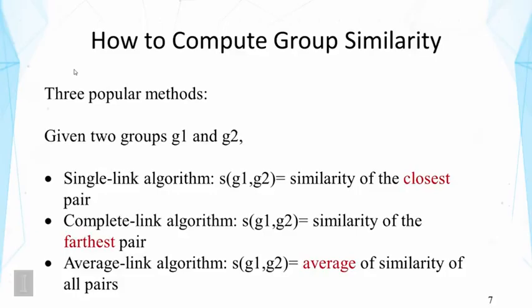To implement this algorithm, we need to compute group similarity since we are only given the similarity function for two objects. As we group objects together, we also need to assess similarity between two groups. There are three popular methods: single link, complete link, and average link. Single link defines group similarity as the similarity of the closest pair of the two groups. Complete link defines it as the similarity of the farthest pair. Average link defines it as the average similarity of all pairs of the two groups.